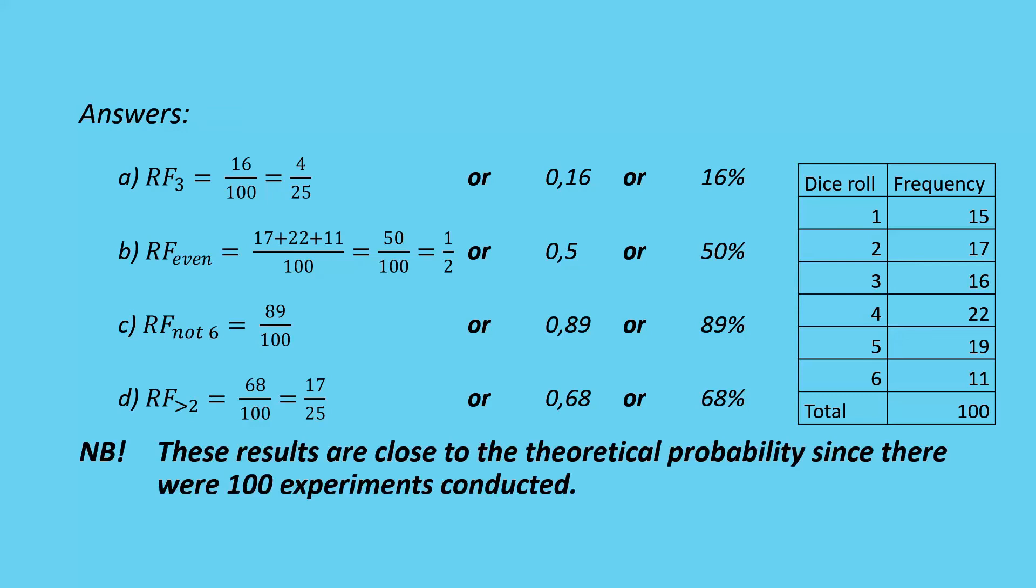So these results are close to theoretical probability since there were 100 experiments conducted. If we only did this 10 times or 15 times, 20 times, you would not get as close to theoretical probability. It's only because we did the experiment so many times that things evened out quite closely. You'll still see that there's quite a variance there.